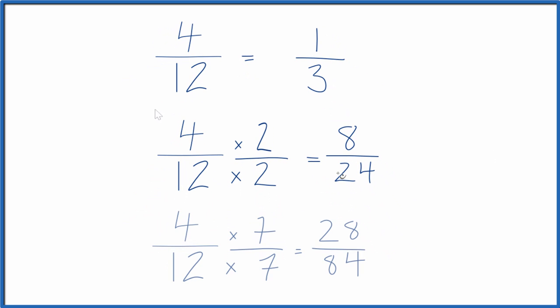Let's do one more. So here we multiplied by 7 over 7, which is just 1. We end up with 28 eighty-fourths. That's another equivalent fraction.